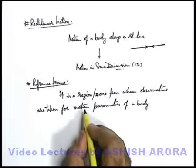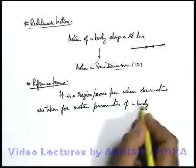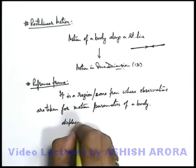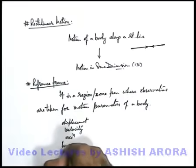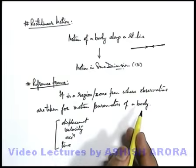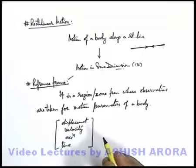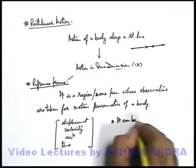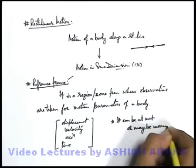When a body moves, the parameters which are associated with its motion are displacement, velocity, acceleration, and time. The region from where all these observations are taken, we define as a reference frame. A reference frame can be at rest or may be in motion.